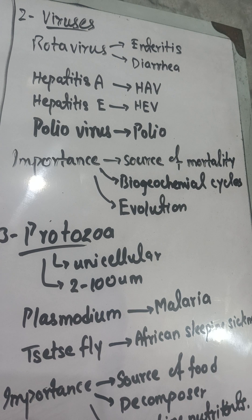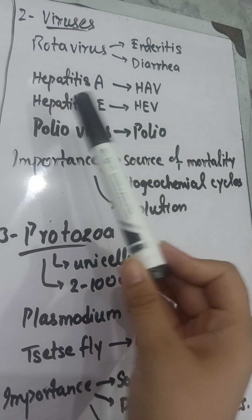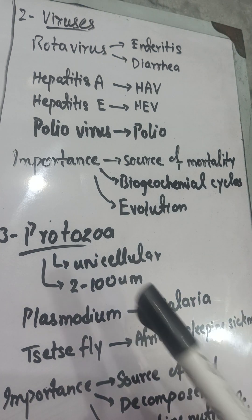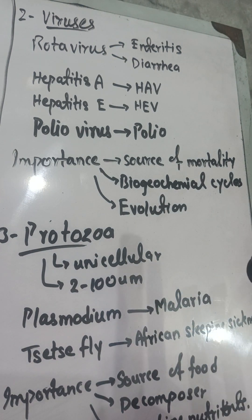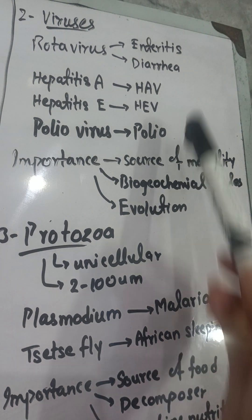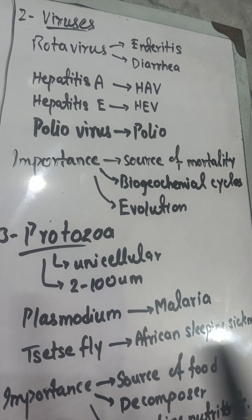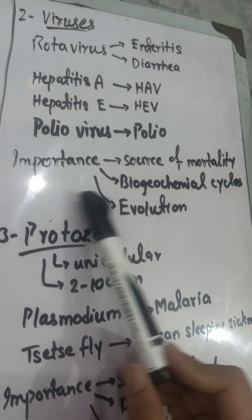The second most abundant microorganism in water is the virus. Rotavirus causes inflammation in the gut and diarrhea. Hepatitis A virus causes hepatitis A. Hepatitis E virus (HEV) causes hepatitis E. Poliovirus is also present in water and is responsible for causing polio disease.